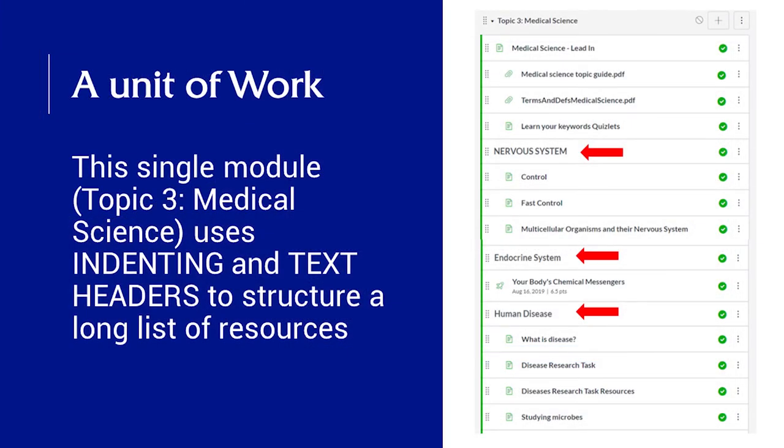This particular module, called Medical Science, is a science unit for year nine. It uses indenting and text headers, which helps to structure a long module into sections. You can have a module per topic and then structure that into particular sections. These provide visual cues that help learners navigate and locate content in your course.